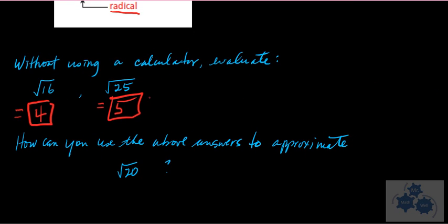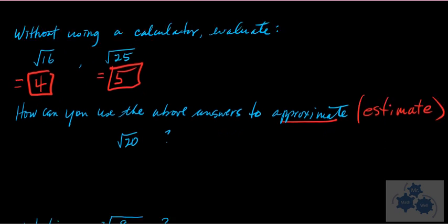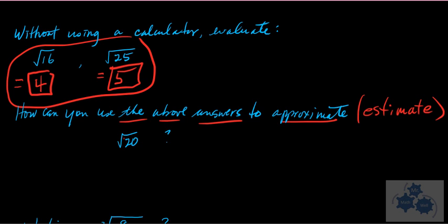But what if I asked you to approximate the square root of 20? Even though 20 is not a perfect square, there is a square root of 20 — some number that when multiplied by itself gives 20. Since it's not a perfect square, it won't be a whole number. Use the fact that √16 = 4 and √25 = 5 to estimate what √20 might be.